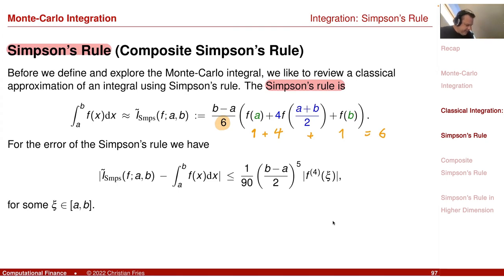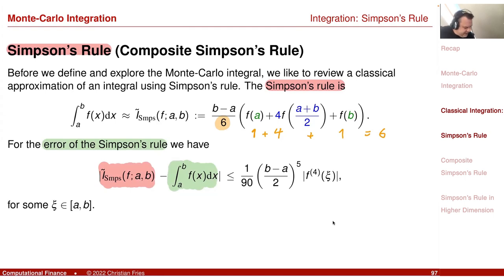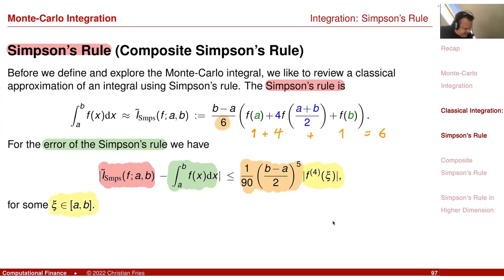The error estimate for Simpson's rule is: the difference between the approximation and the true integral is smaller than one divided by 90 times (b minus a) to the power of five, times a constant involving the fourth derivative of the function at an intermediate point — that's the remainder from the Taylor expansion. This estimate is straightforward to derive and can be looked up.